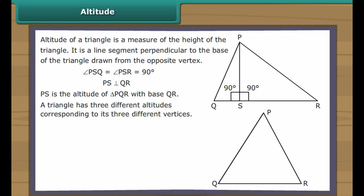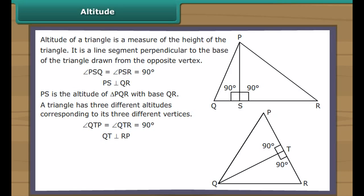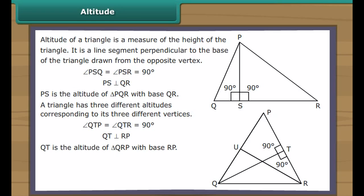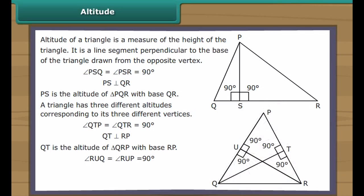We draw a line segment from Q perpendicular to RP at point T. It intersects RP at right angles; therefore QT is the altitude of triangle RPQ with base RP. We draw another line segment from R perpendicular to PQ at point U. It intersects PQ at right angles; therefore RU is the altitude of triangle RPQ with base PQ.